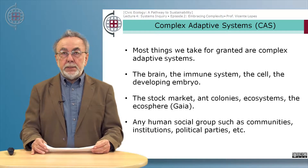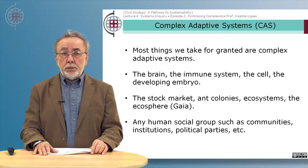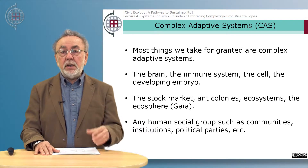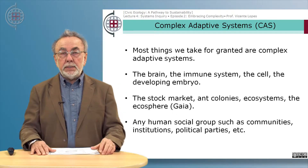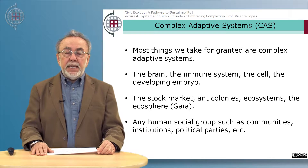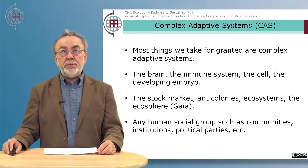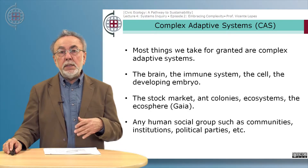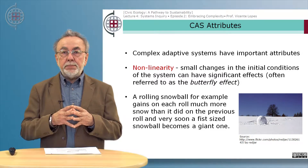Most things we take for granted are complex adaptive systems — things like the brain, our immune system, the cell, the developing embryo, the stock market, ant colonies, ecosystems from very small scale all the way to the entire planet, the ecosphere, Gaia, and any human social groups such as communities, institutions, political parties, etc. They are all complex adaptive systems. Therefore, if you have purposes to understand their behavior and dynamics, it is very important to understand complex adaptive systems theory.